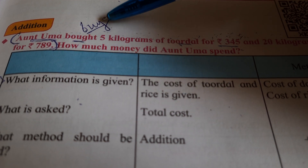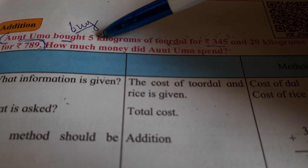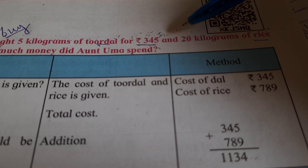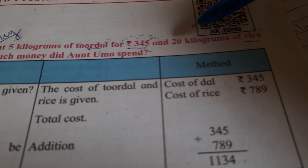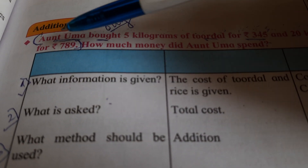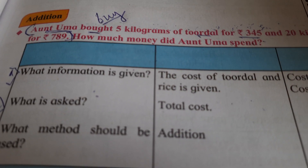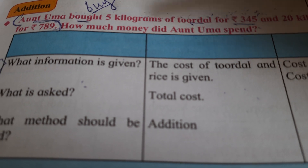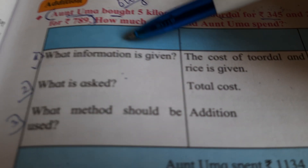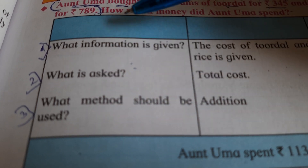What is the past tense of 'buy'? She bought 5 kilograms of turdal at Rs. 345 and 20 kilograms of rice for Rs. 789. When we are going to solve the word problem, we have to take into consideration 3 points.